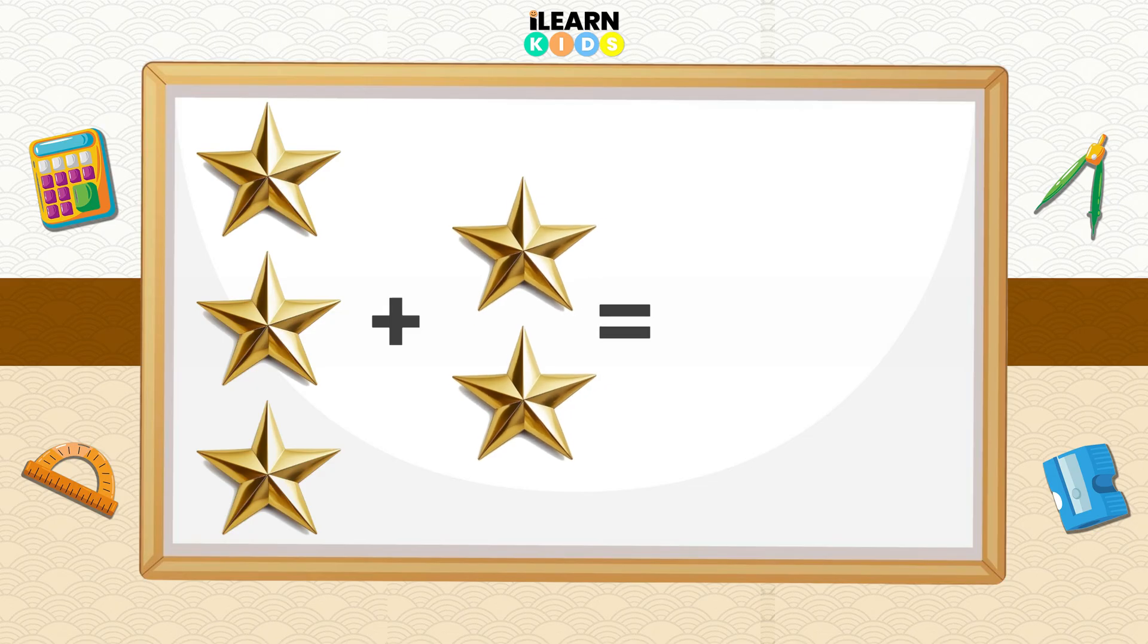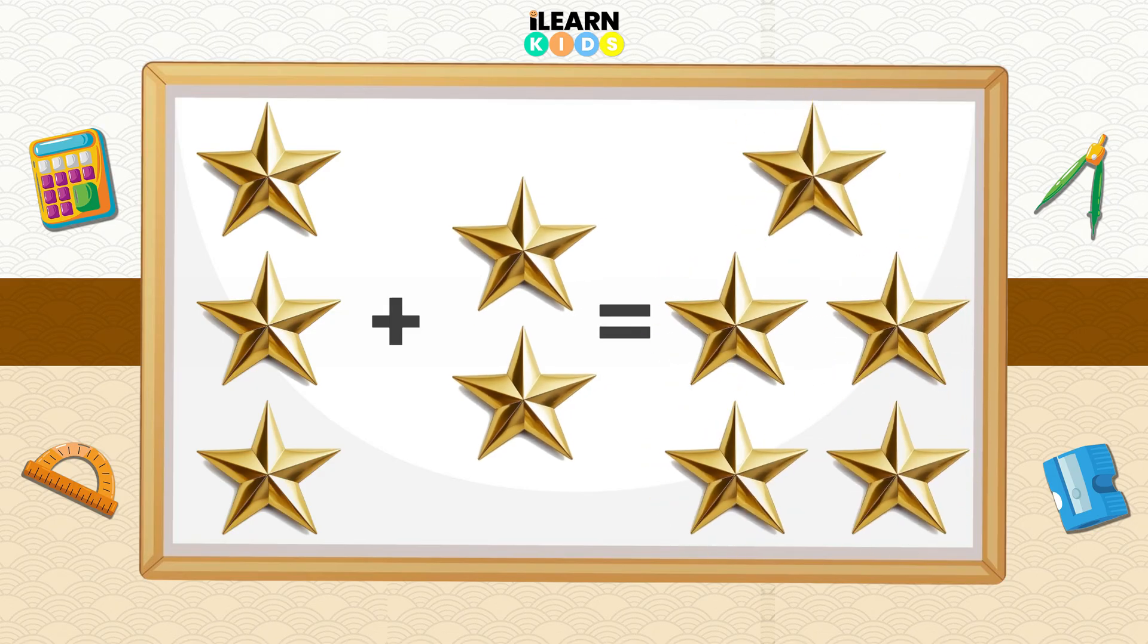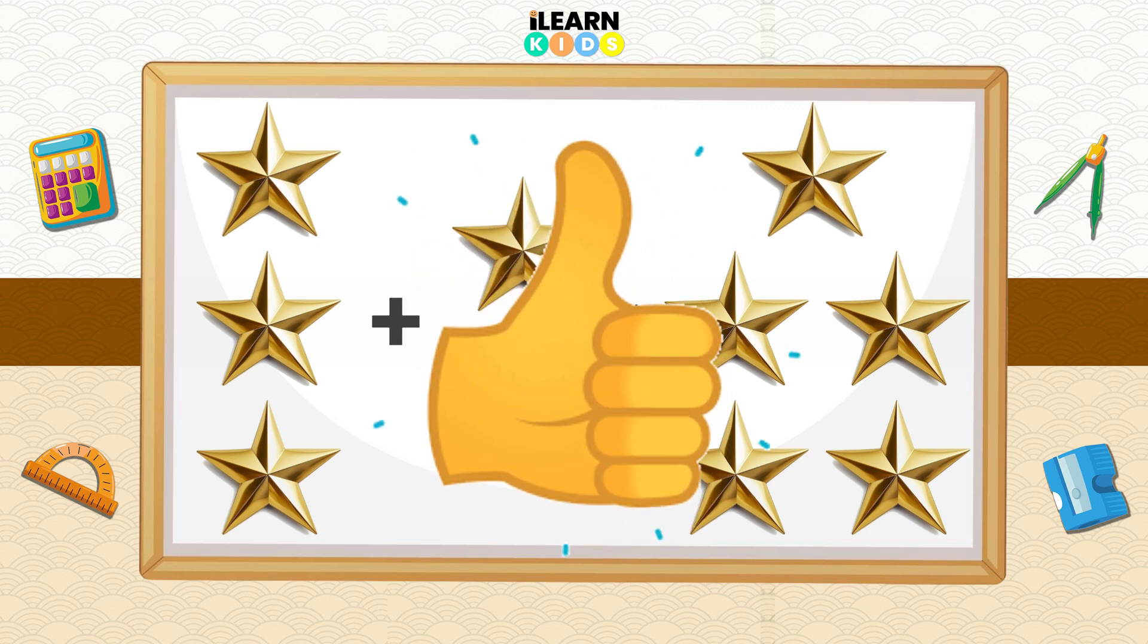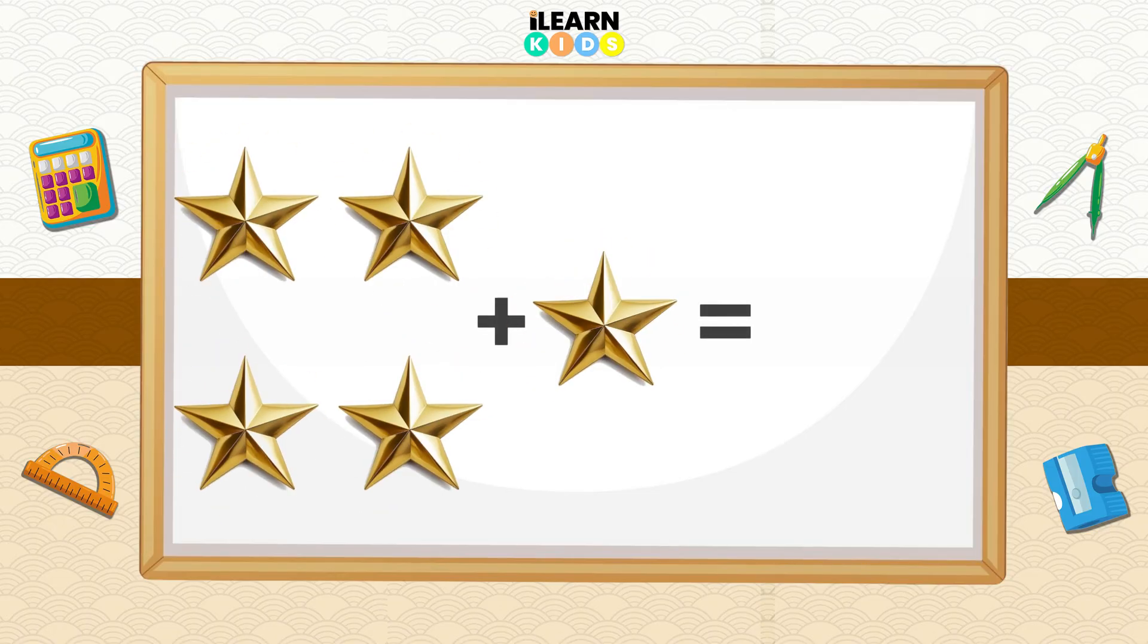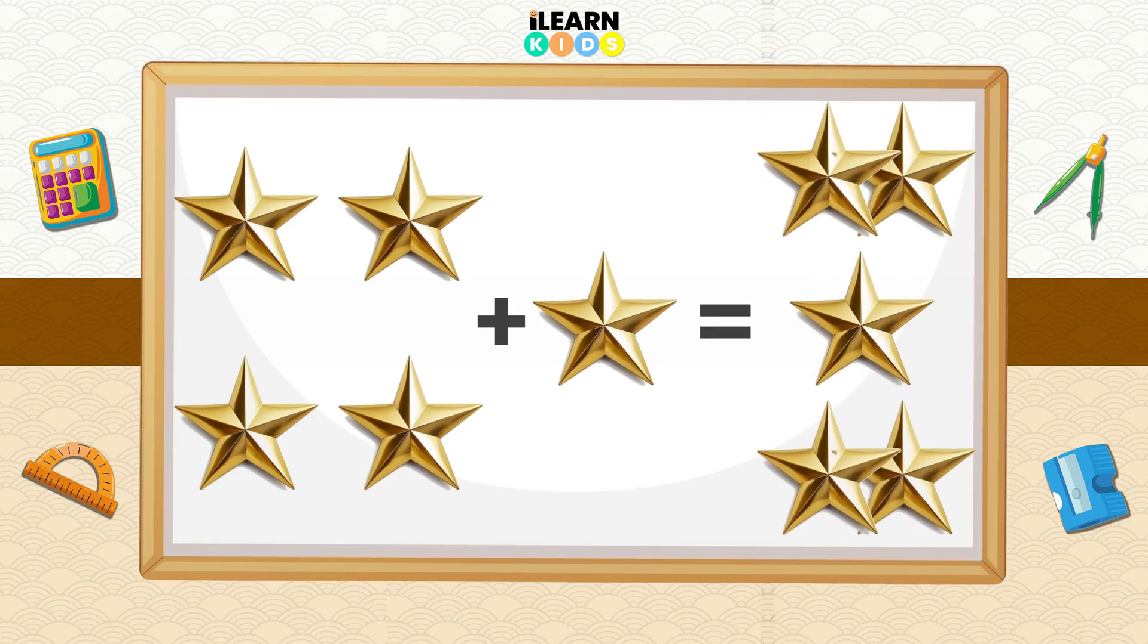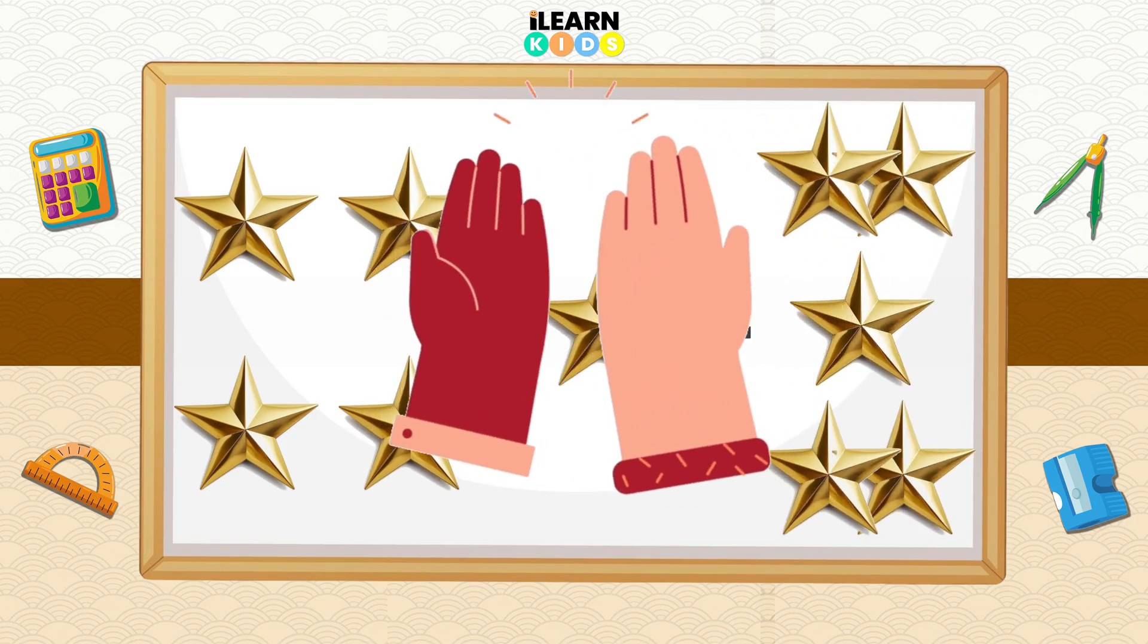That's right, 2 plus 3 equals 5. Can you do a thumbs up if you got it correct? Great! Now what about 4 plus 1? Count with me: 1, 2, 3, 4, and 5. Yes! High five, great job!